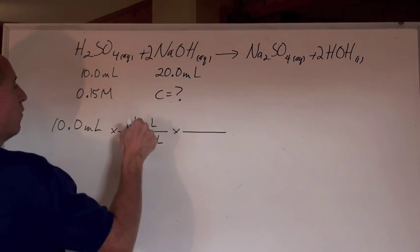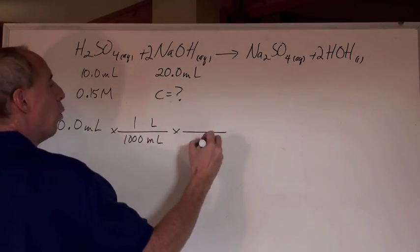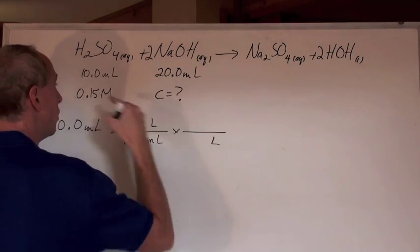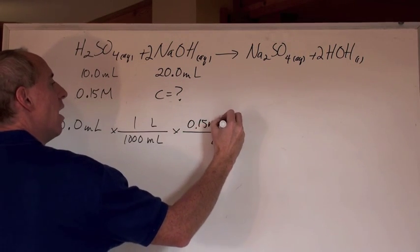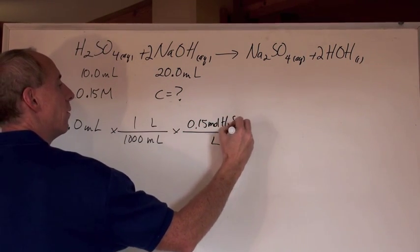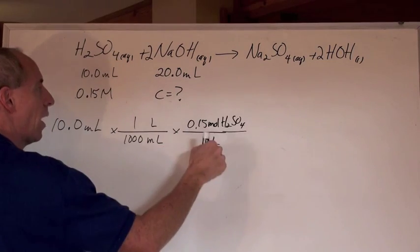So now we've got the volume in liters, and what don't we want? Liters. What do we want? Moles. And it's 0.15 moles of H2SO4, right, per liter.